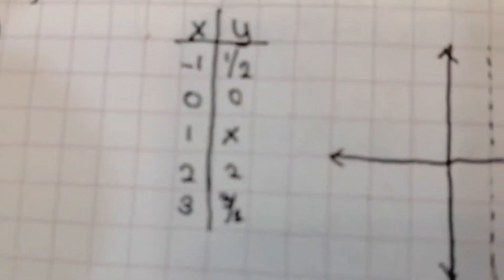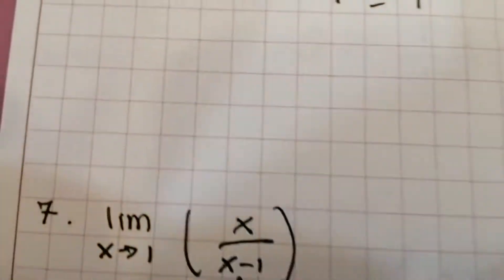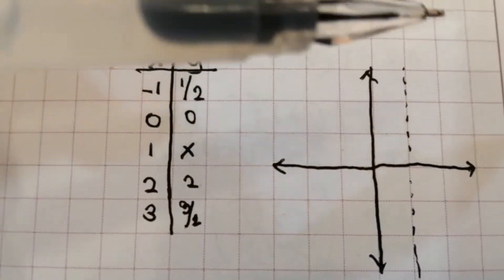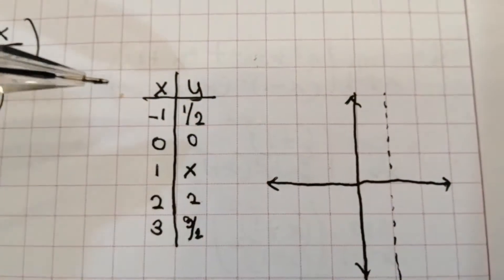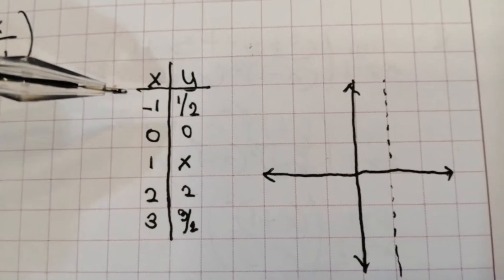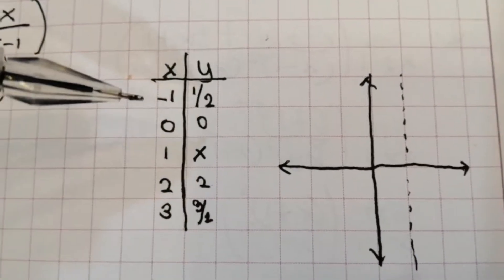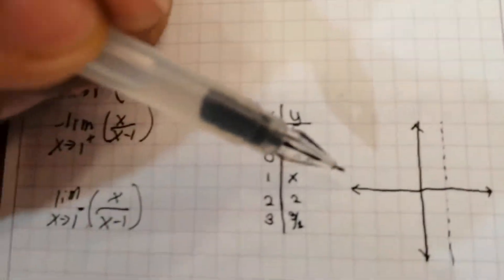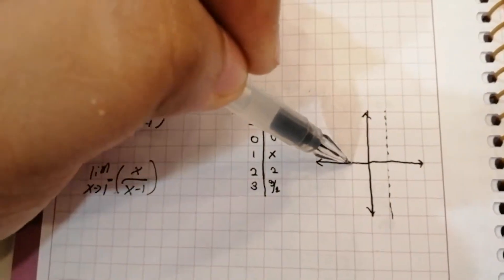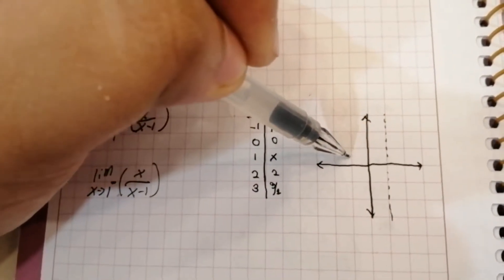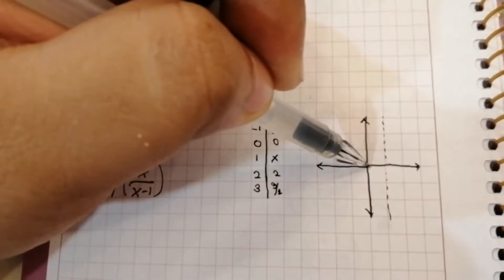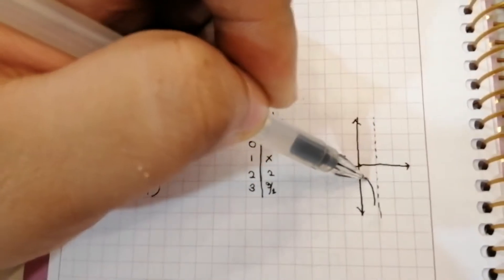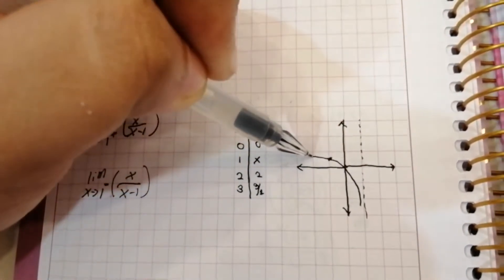So let's go here — as you can see, if we have x over x minus 1, it will go to one value. Let's use a table of values to draw the graph. So we will have negative 1 and 1 half, then 0 and 0. As you can see, we will graph this on this side.